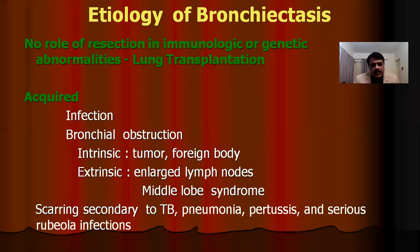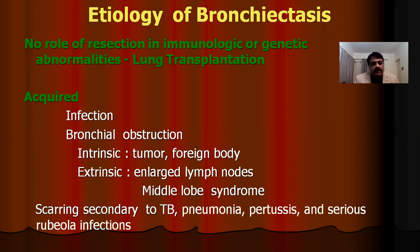In etiology, if the cause is genetic or immunological, there is no role of resection — lung transplantation is the end treatment. However, if the infection is acquired, or it is tuberculosis, or due to pneumonia, or there is bronchial obstruction with a tumor within the bronchial tree, foreign bodies, or extrinsic causes, that is where the role of surgery comes in.